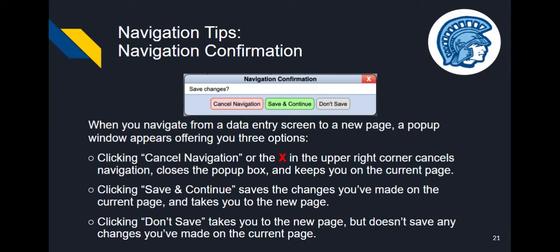The last navigation tip is about the Navigation Confirmation pop-up window. This pop-up will appear if you've typed something new on the current page and then navigate to a new page. You have three options: clicking Cancel Navigation or the red X cancels the navigation, closes the pop-up, and keeps you on the current page. Clicking Save and Continue saves the most recent changes and navigates you to a new page. Clicking Don't Save takes you to the new page but doesn't save your most recent changes. Always save frequently — changes don't automatically update.